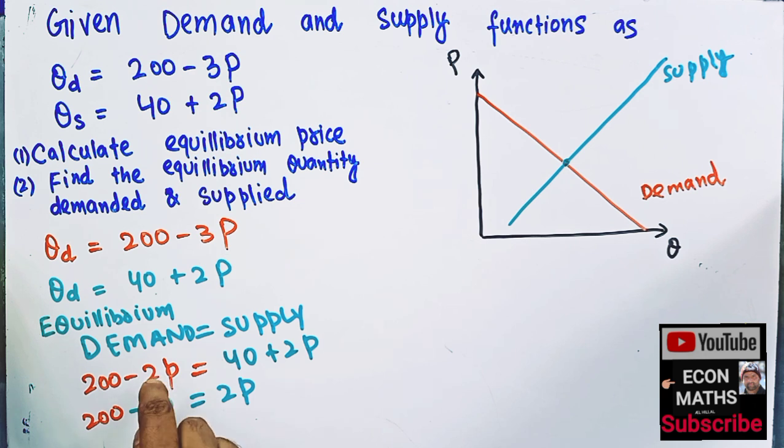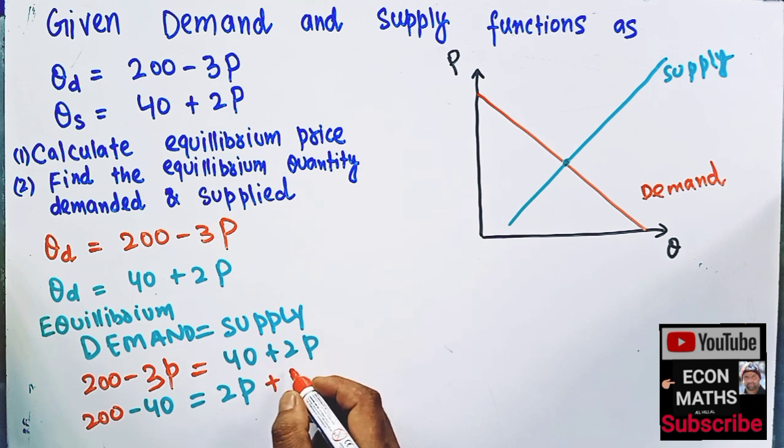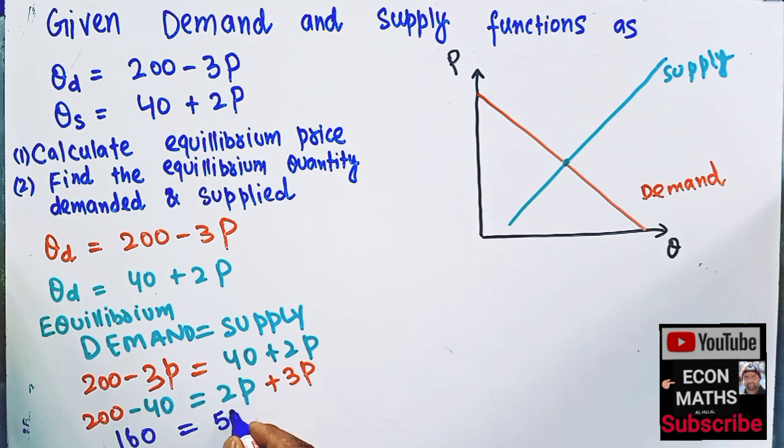Sorry, it is 3P here. So this is 3P here. If I transpose it here, it will become plus 3P. So we have 200 minus 40, which comes out to be equal to 160. We have 160 is equal to 2P plus 3P is equal to 5P.